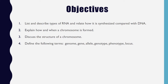The objectives for today's lecture are: 1. List and describe types of RNA and relate how it is synthesized compared with DNA. 2. Explain how and when a chromosome is formed. 3. Discuss the structure of a chromosome. 4. Define the following terms: genome, gene, allele, genotype, phenotype, and locus.